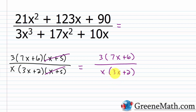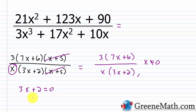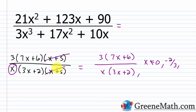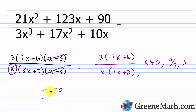You can leave the answer in factored form to show nothing else cancels, or distribute. For the restricted values, look at the original denominator x(3x + 2)(x + 5): x = 0 gives one restriction; setting 3x + 2 = 0 gives x = -2/3; and the canceled factor (x + 5) = 0 gives x = -5. So x cannot equal 0, -2/3, or -5 — three restricted values.